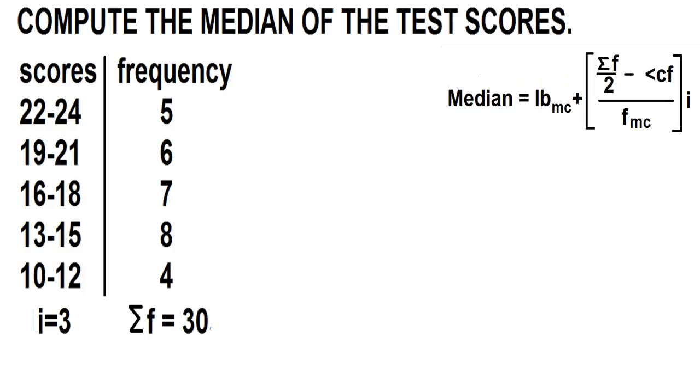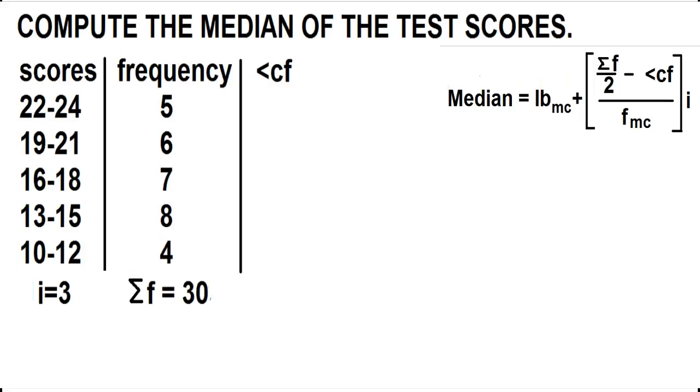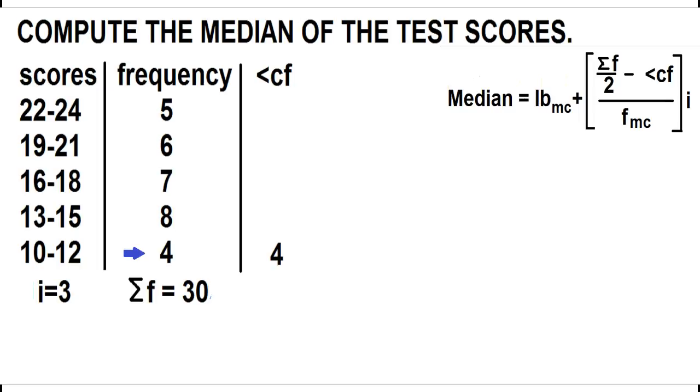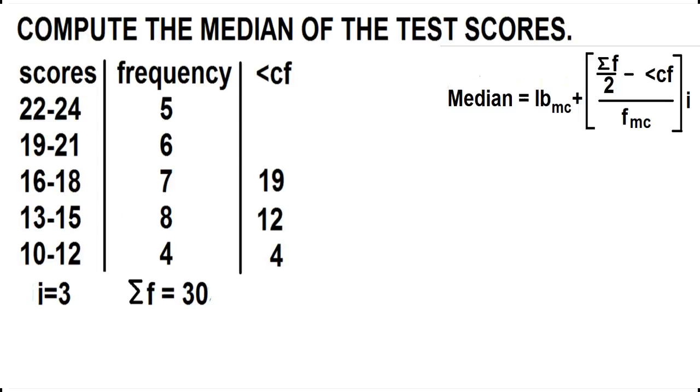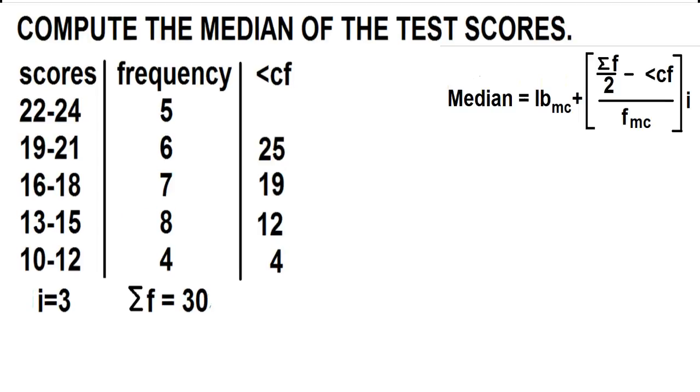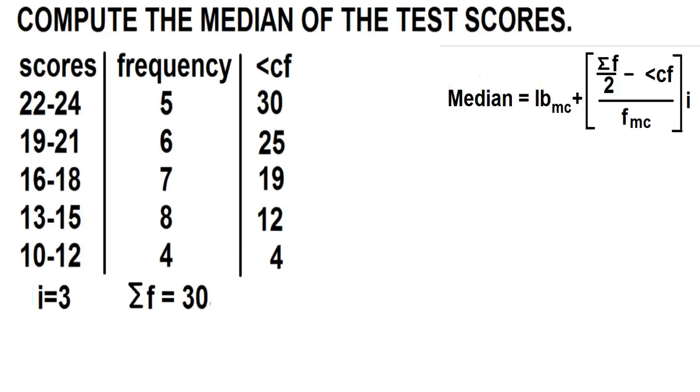Let's add a column for cumulative frequency. To fill this column, simply copy the frequency of the lowest class interval, which is 4. Then add the frequency of the next upper class. 4 plus 8 is 12. 12 plus 7 is 19. 19 plus 6 is 25. And 25 plus 5 is 30.